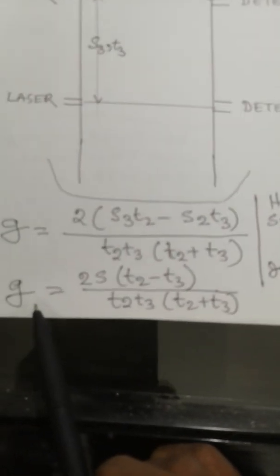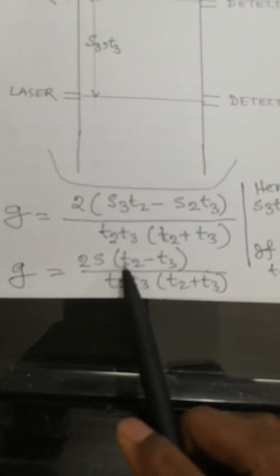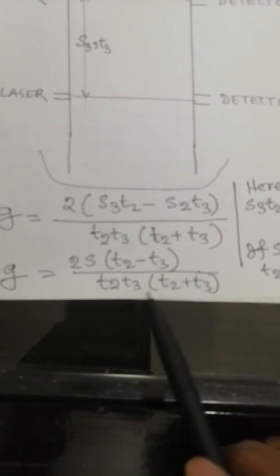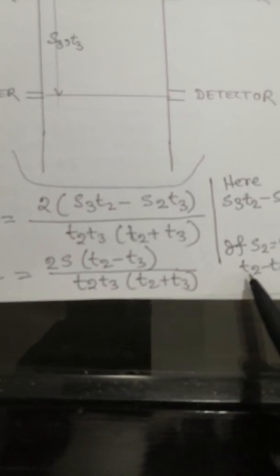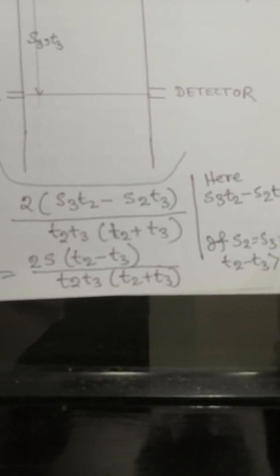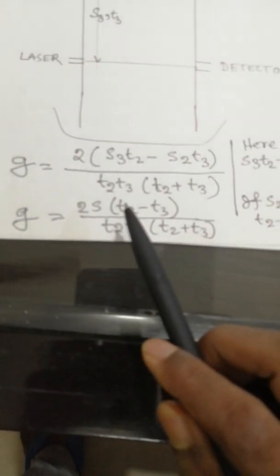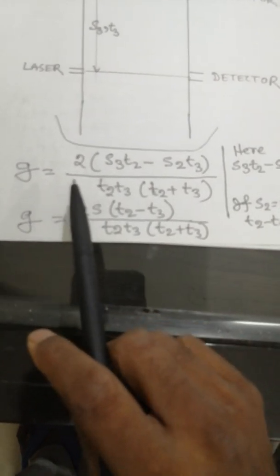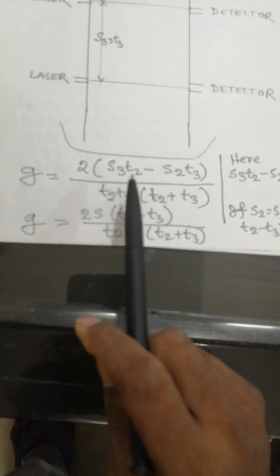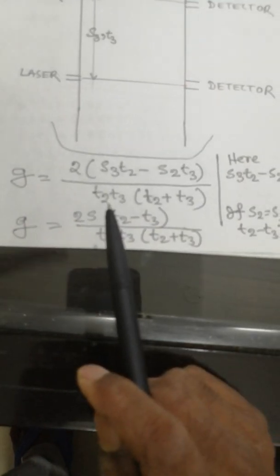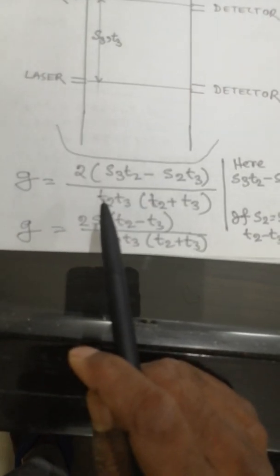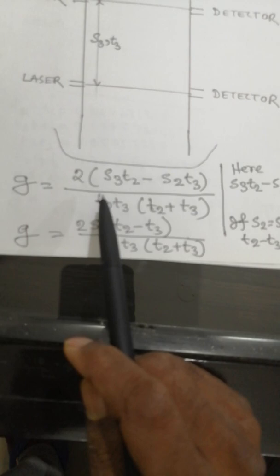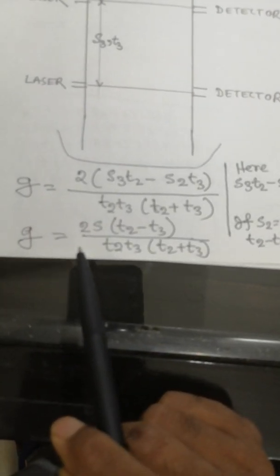Here T2 minus T3 must be greater than 0. In this equation we can see that g is a function of the distance travelled by the object and times T2 and T3. There is no term related to initial velocity linked with this equation.